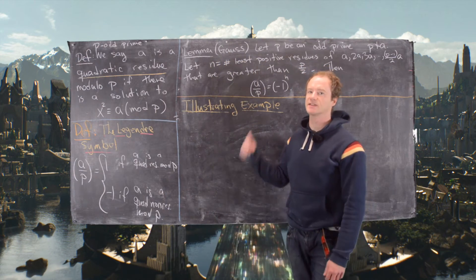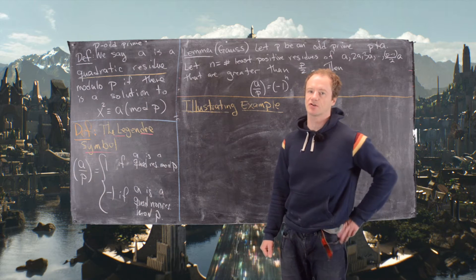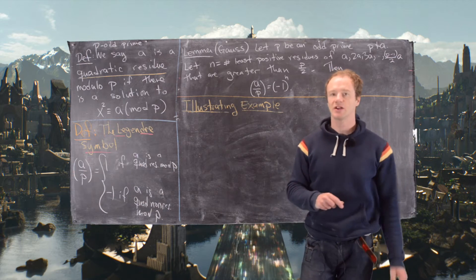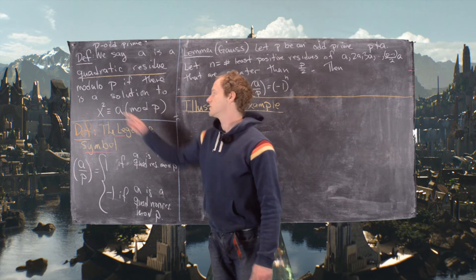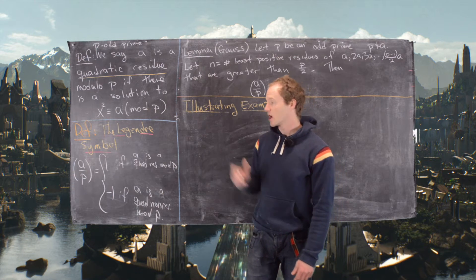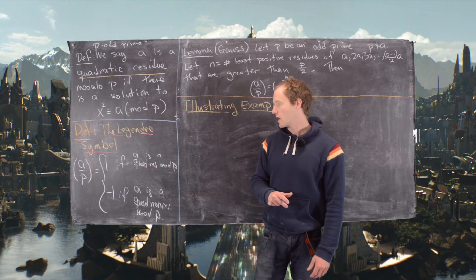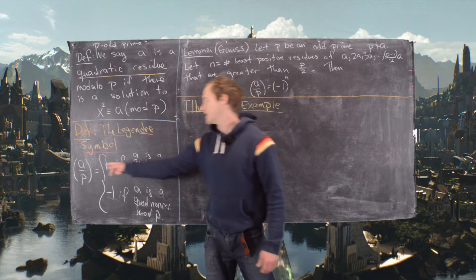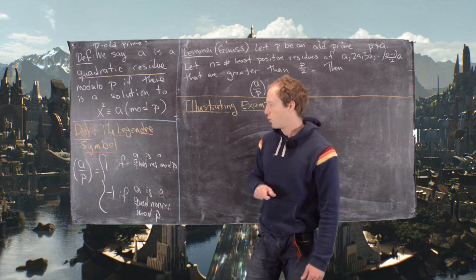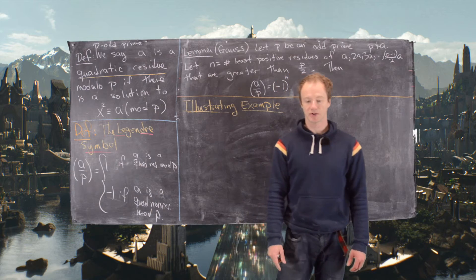In this video we're going to look at something called Gauss's Lemma, which has something to do with quadratic residues and the Legendre symbol. A is a quadratic residue modulo p if there's a solution to x squared congruent to a mod p. The Legendre symbol asks: are you a quadratic residue mod p? It's written as (a/p) and the answer is 1 if you are a quadratic residue and -1 if you are not.